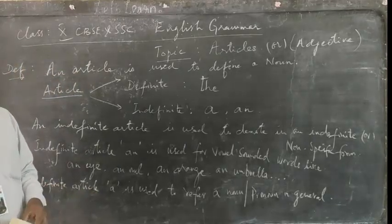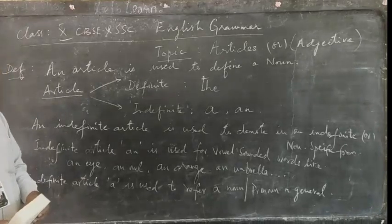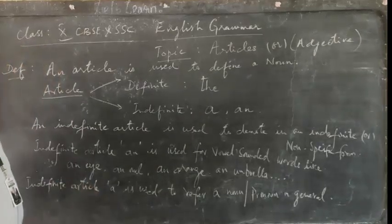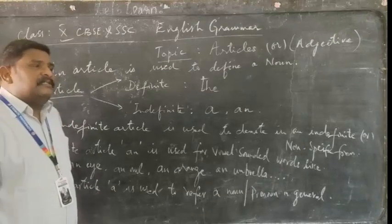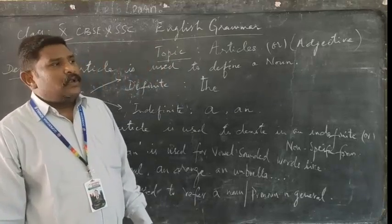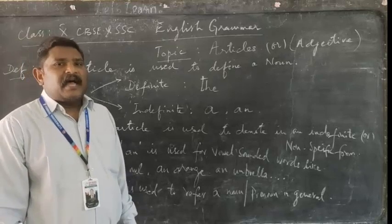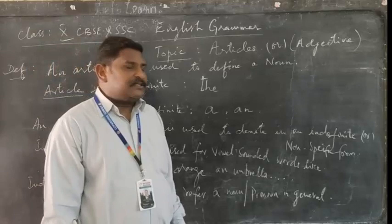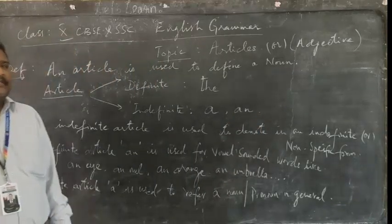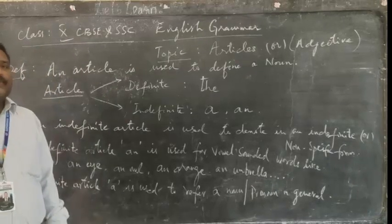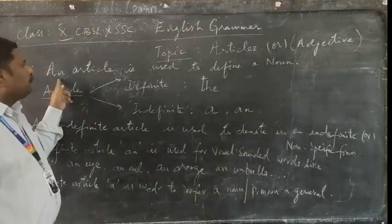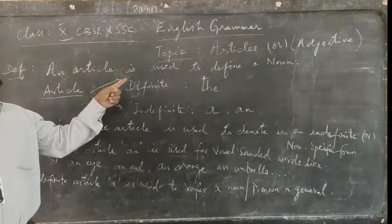An article is one of the components in grammar. Right from our primary education we have learned about articles. When you categorize articles, they fall under adjectives — one of the eight parts of speech. Articles belong to adjectives because these adjectives are used to refer to a noun and define a noun. The definition of an article: an article is used to define a noun.